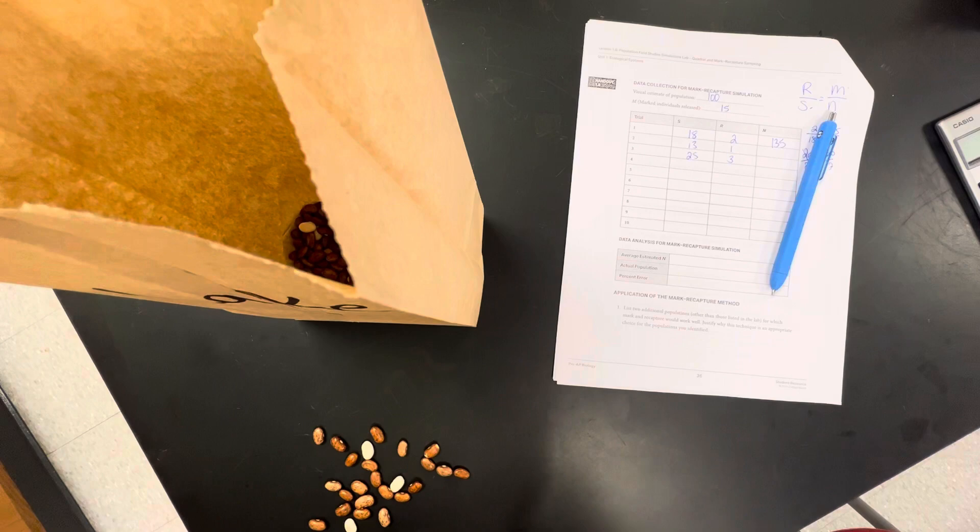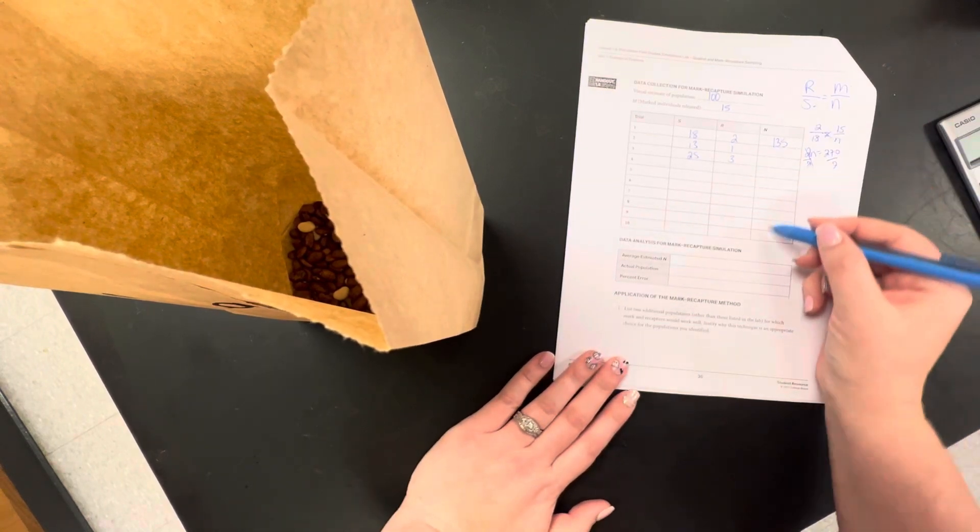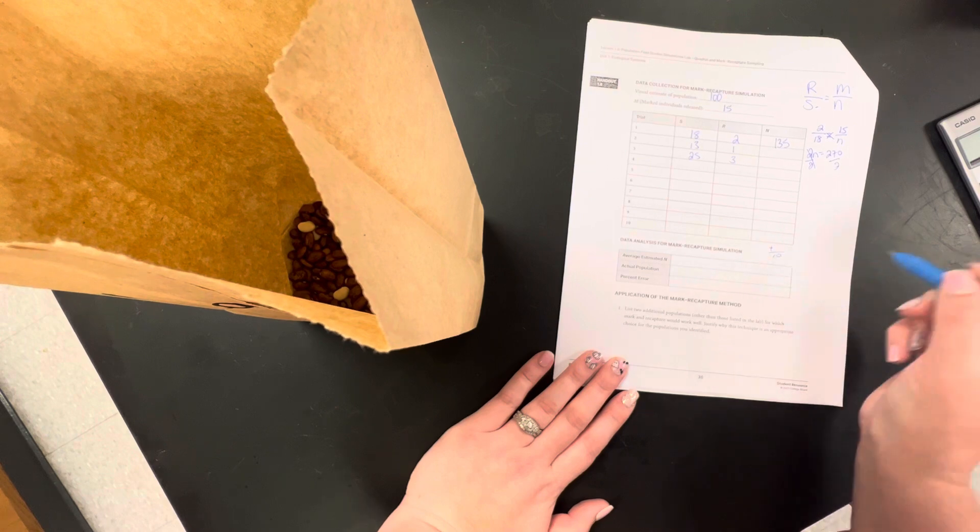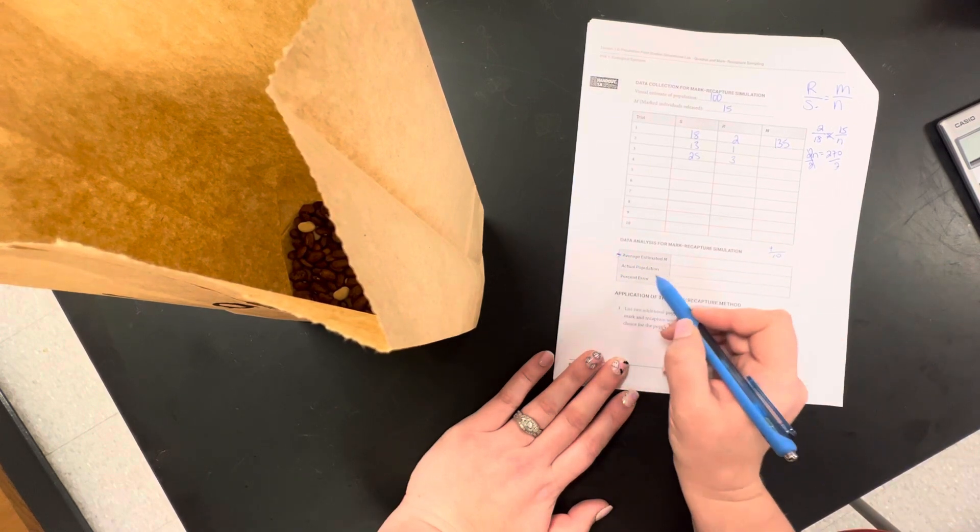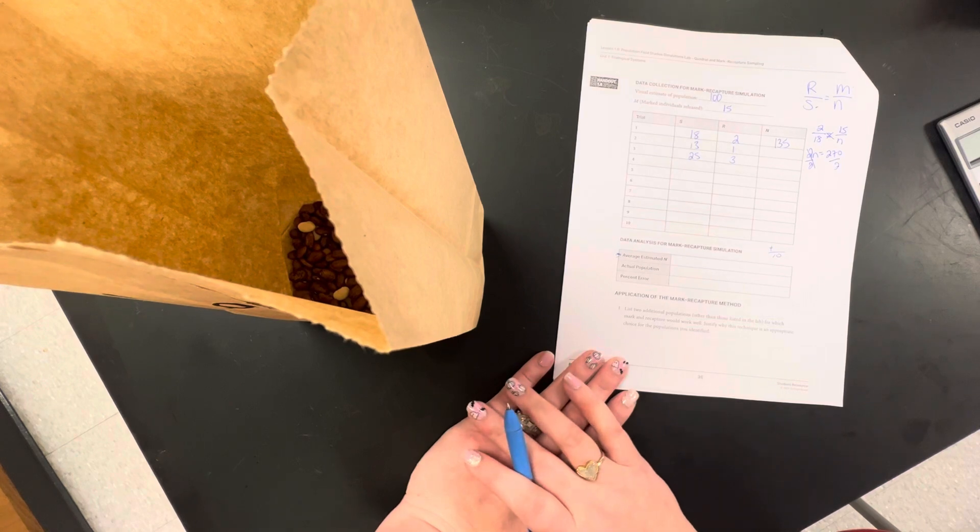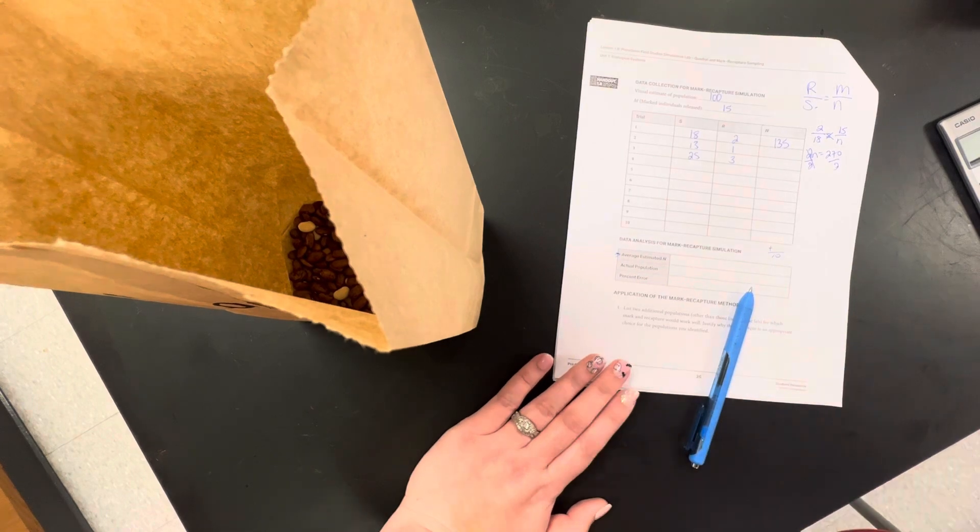So I am going to continue doing that until I have 10. Then I am going to calculate all my N's and then add those up and divide it by 10 to get my average. Actual population is going to be how many I counted. And then you are going to use your percent error to calculate our percent error. I will attach my data to the assignment.